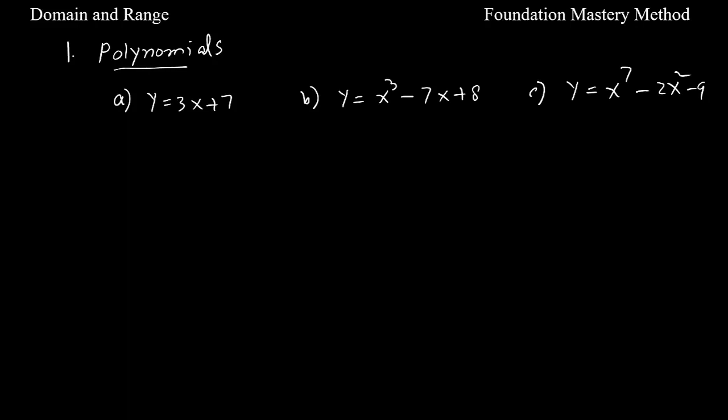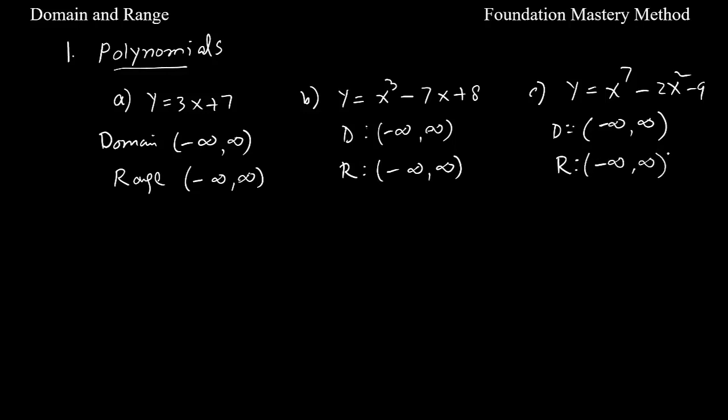First I'm taking three polynomials. The first one is degree 1, second one is degree 3, and the third one is degree 7. These three examples are polynomials of odd degree. The domain for all three is negative infinity to positive infinity. If we talk about the range, all will be negative infinity to positive infinity because these are polynomials of odd degree.